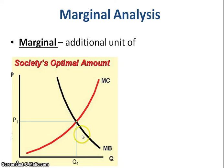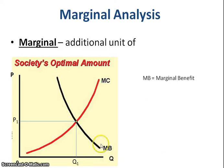We have two curves here. We have the marginal benefit curve, which is downward sloping, and the marginal cost curve, which is upward sloping.